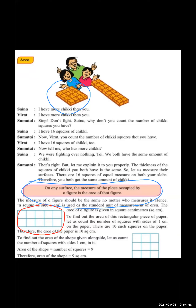You want to follow the formula. Area of the shape is equal to the number of squares. You want to count how many squares there are. Everyone start counting from your side. Nine squares are there — very good! So your formula gives: area of the shape is equal to number of squares.